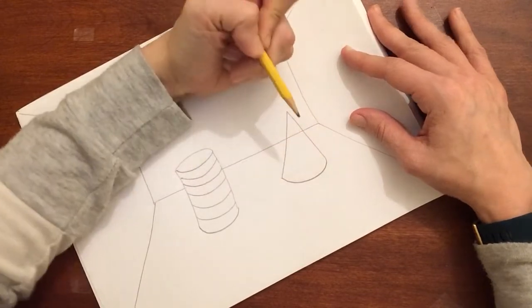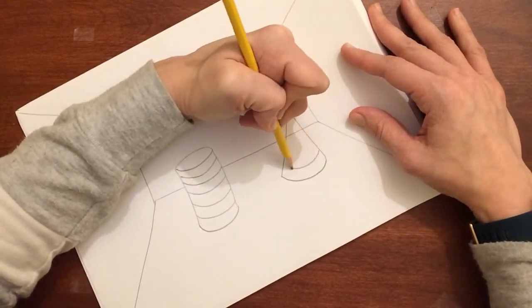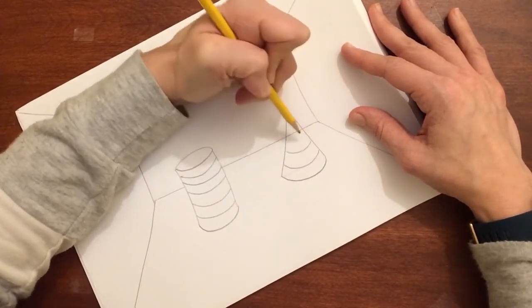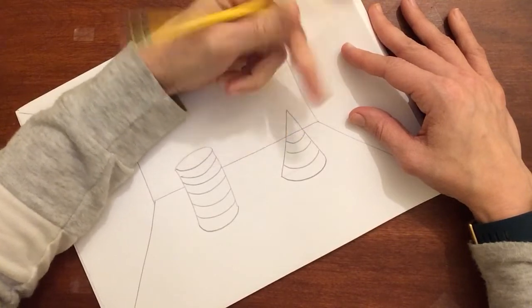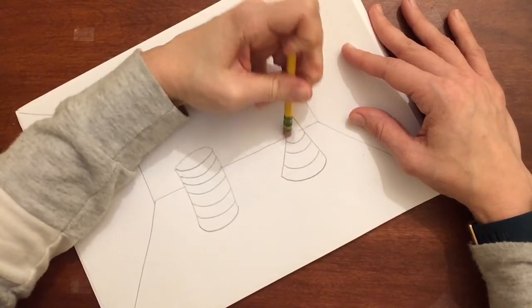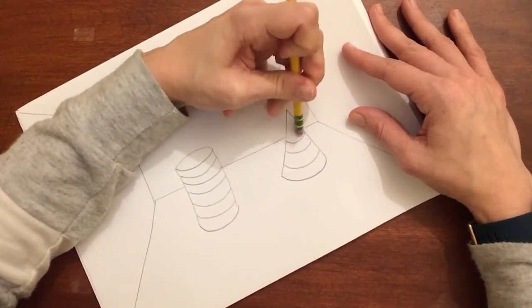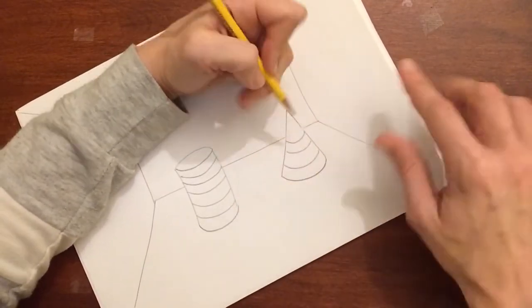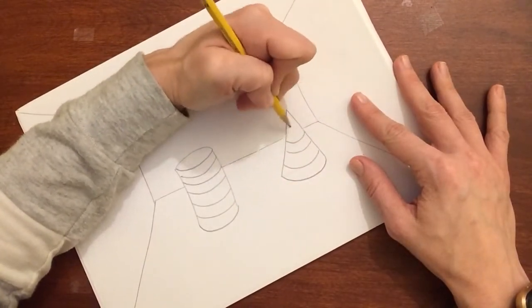And then I'm going to curve the bottom and curve a few more lines on there. Again, I have to erase this guy because I don't see that edge anymore if the shape or the form is in front of it.